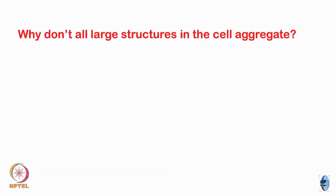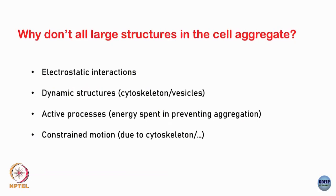You might ask: given that the cell is very crowded with millions and billions of objects, why doesn't everything just clump together? What prevents aggregation? One reason is that this was a very ideal calculation — I only wrote down the −TS entropy part. In principle there is also an energetic part, most importantly electrostatic interactions. These proteins are often charged, so electrostatic interactions change the equilibrium from what we have argued.